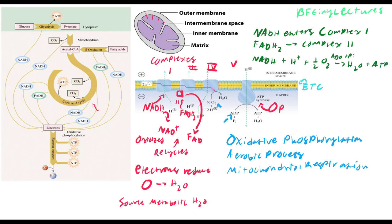Is this process of oxidizing NADH and FADH2 spontaneous? Yes — this whole reaction gives us a delta G that is negative, really negative. So it is spontaneous, thermodynamically stable, and thermodynamically favorable.